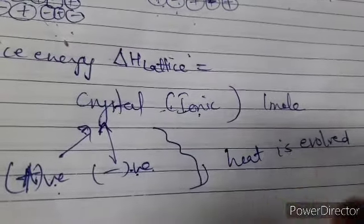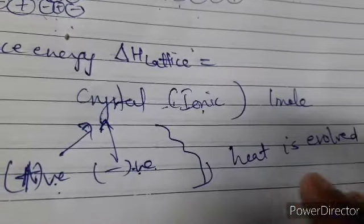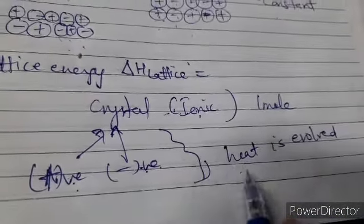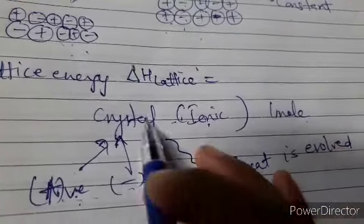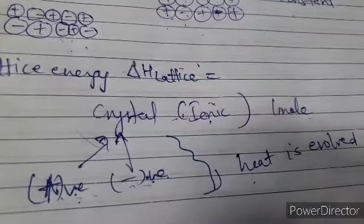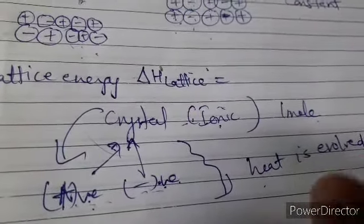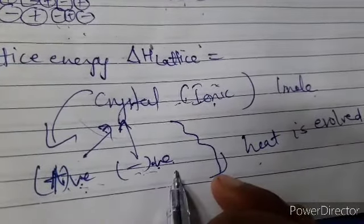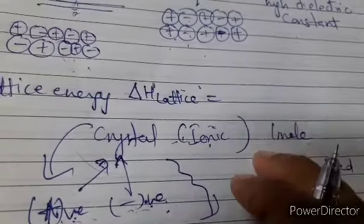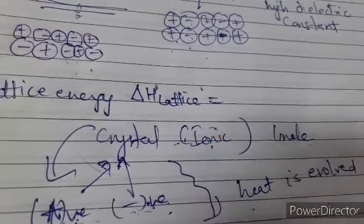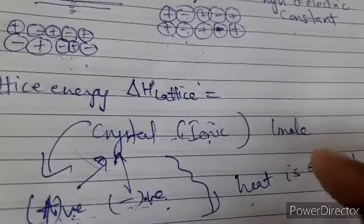The same amount of heat energy that is released when forming the ionic crystal must be supplied to break it back into its respective ions. This is the lattice energy. Lattice energy decreases with increasing ionic size — when ions are smaller, lattice energy is higher, and vice versa. Breaking the crystal requires the same energy as was released during its formation.